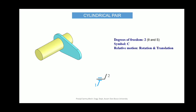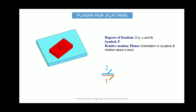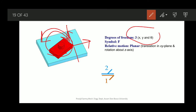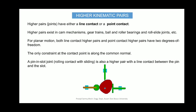Similarly we can have a cylindrical pair, which is evident from its figure. We can also have a spherical pair — like a joystick or ball-and-socket joint — where movement is possible in all coordinates, giving a degree of freedom of 3. A planar pair, or flat pair, also has a degree of freedom of 3: the element can slide in two directions and rotate about the planar axis — three independent movements.